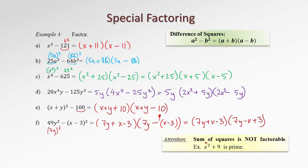It's good to remember that the sum of squares is not factorable. For example, x squared plus 9 is prime and can't be factored. We already experienced the sum of squares in example C — x squared plus 25 is prime, so we don't even attempt any further factoring there.